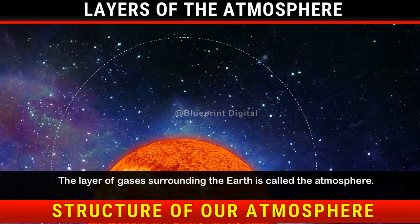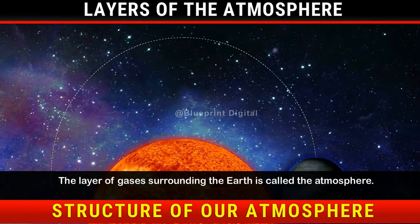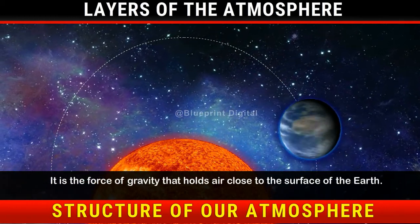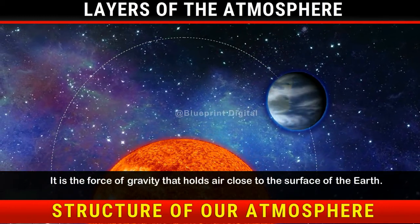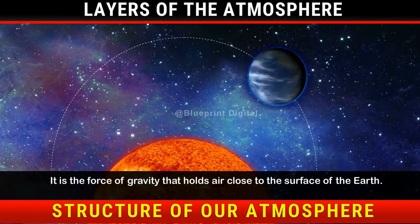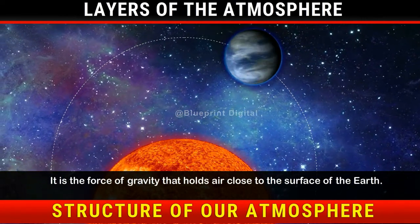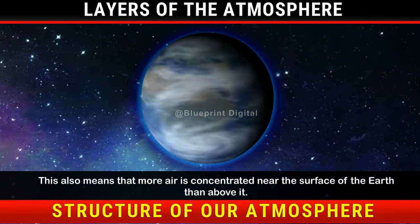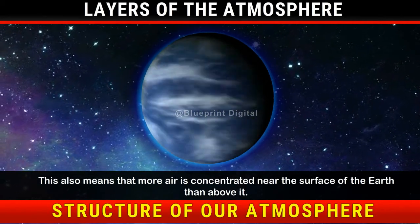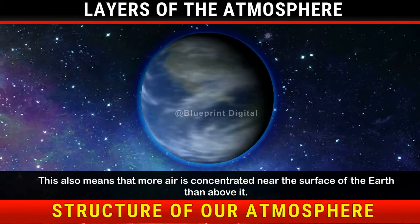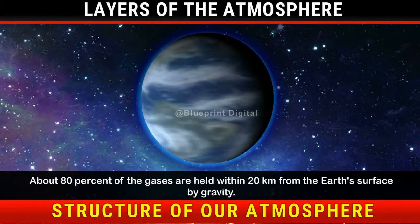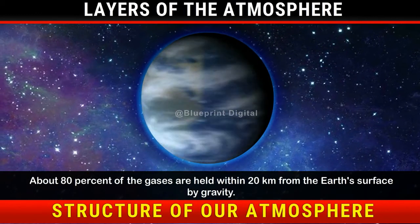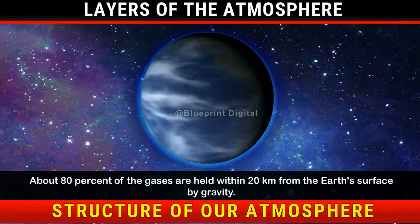The layer of gases surrounding the earth is called the atmosphere. It is the force of gravity that holds air close to the surface of the earth. This also means that more air is concentrated near the surface of the earth than above it. About 80% of the gases are held within 20 km from the earth's surface by gravity.